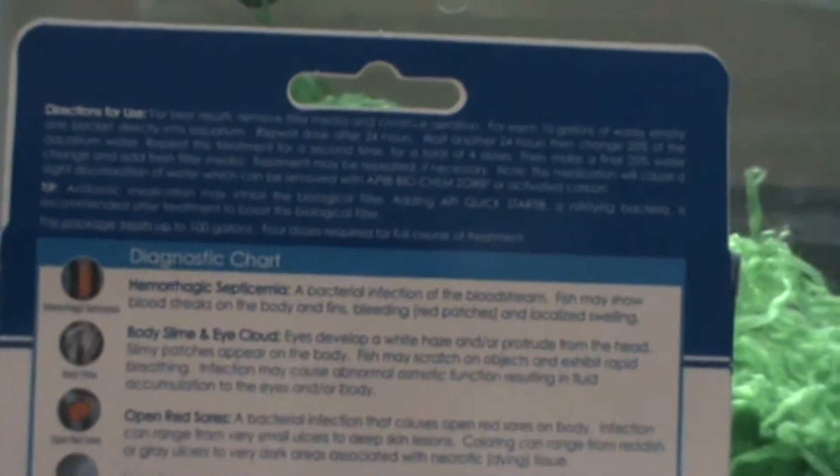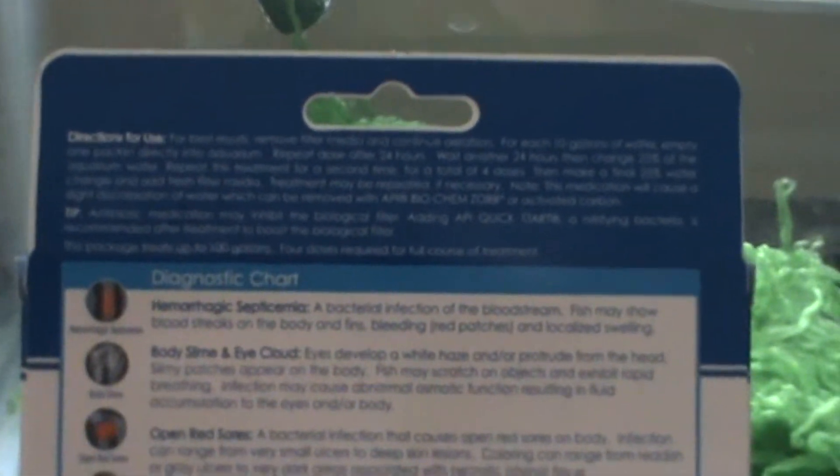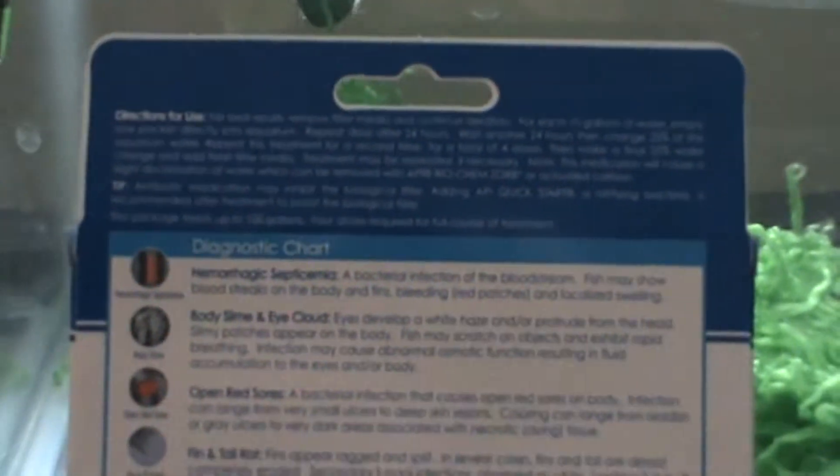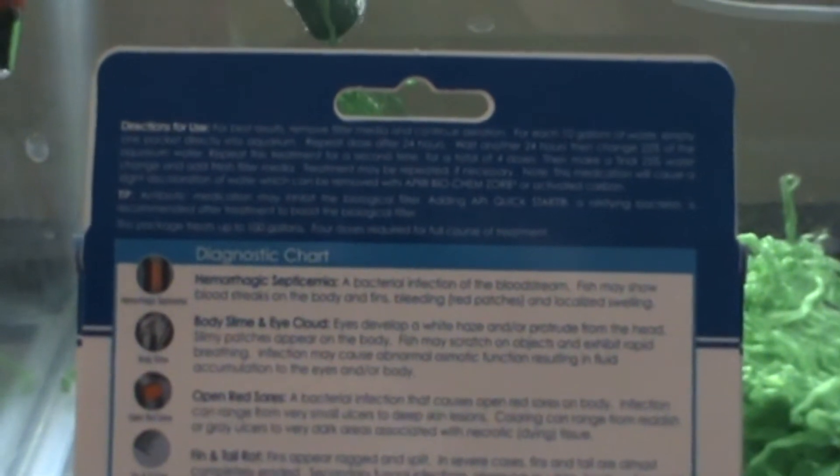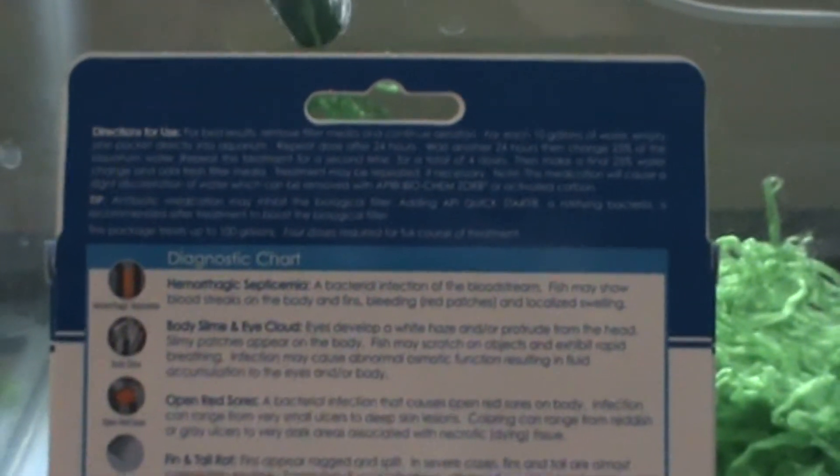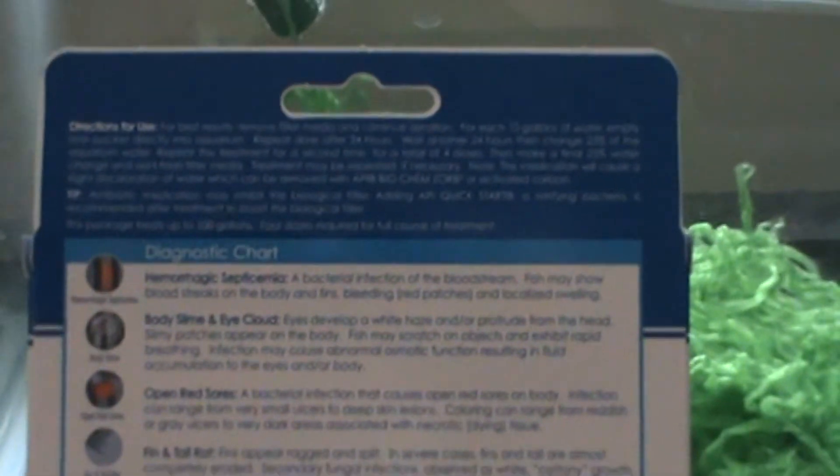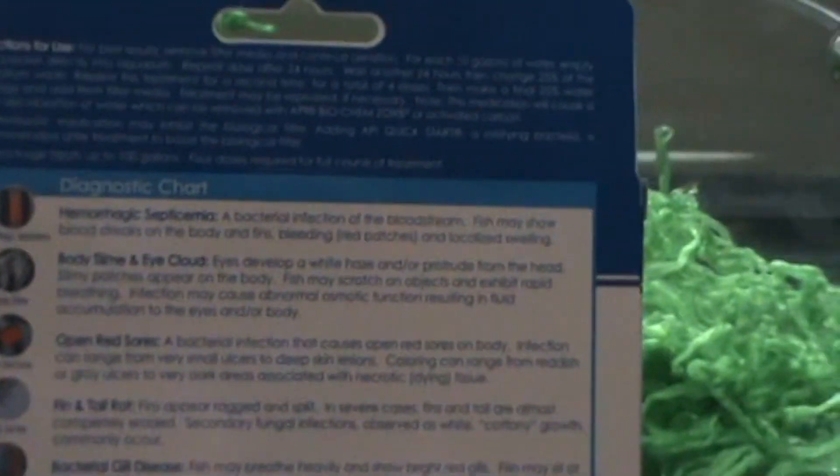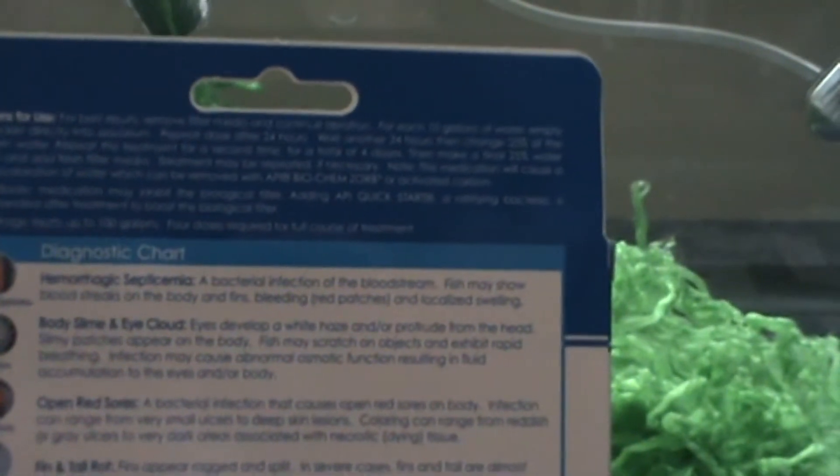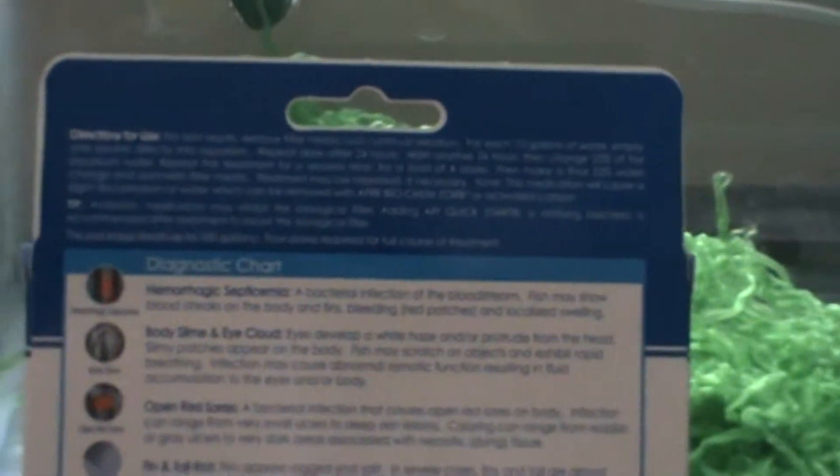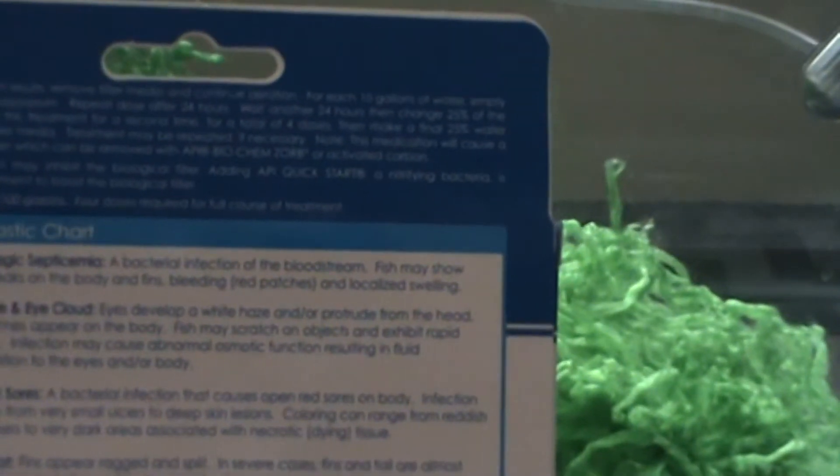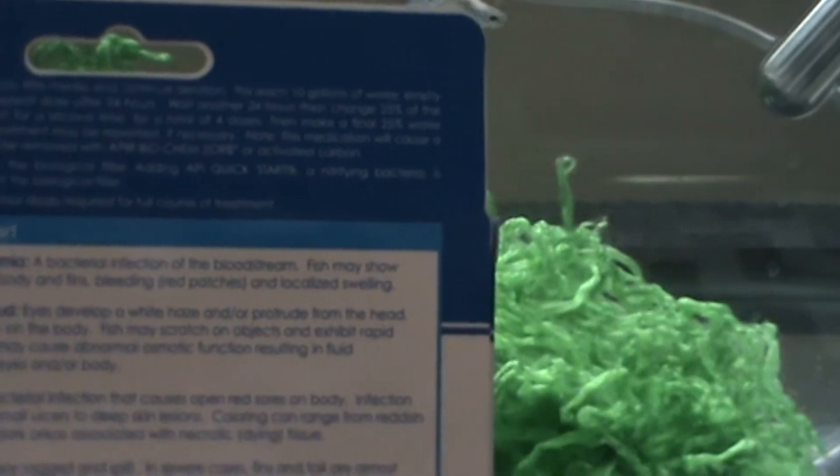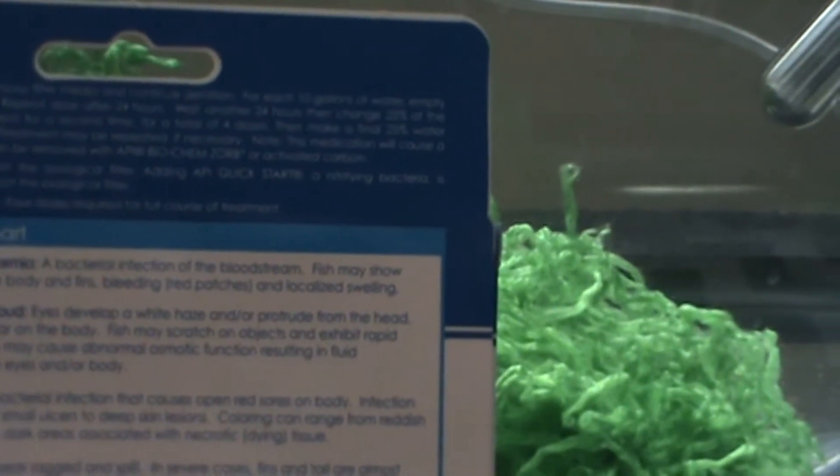I do 100% recommend that you follow the instructions fully because for antibiotics with bacteria, if you don't follow the instructions fully and do the full dose, it can actually work in disfavor for you. It can actually end up making the bacteria stronger and resistant to it. So you definitely want to follow the instructions. Once you get it, you'll be able to see it too. It says for best results remove filter media. I don't because I have a sponge filter, so I have no carbon so it's not going to hurt it. However, Furin-2 can kill your biological filtration. It says antibiotic medication may inhibit the biological filter.